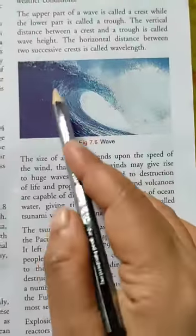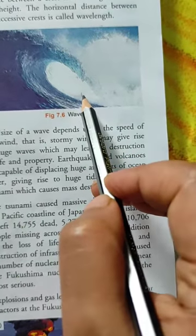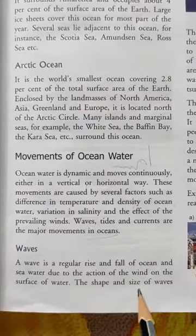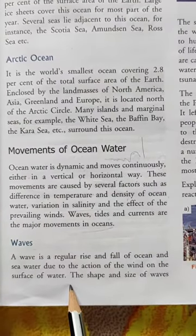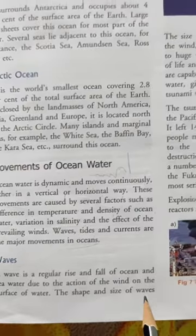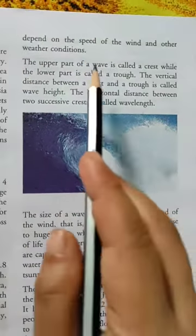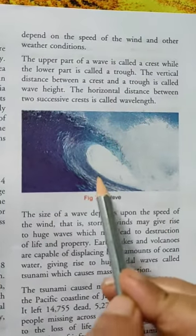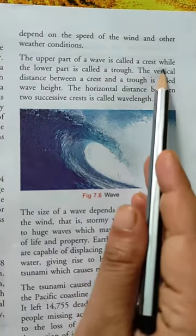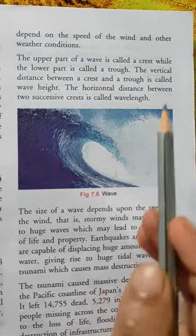A wave is a regular rise and fall of ocean and sea water due to the action of wind on the surface of water. The shape and size of the wave depends on the speed of wind and other weather conditions. The upper part of the wave is called a crest, while the lower part is called a trough.